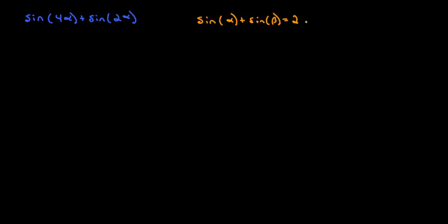2 times the sine of basically the average of the two angles—think the mean of the two angles—times the cosine of the difference of the two angles. Just like that.